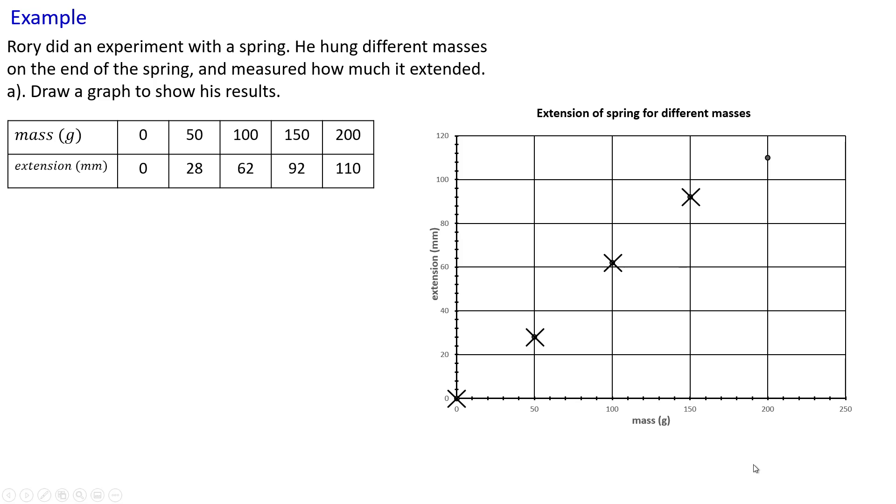150 and 92. And our final one is 200 to 110. Okay. Now they're not quite in a straight line, but they're nearly in a straight line. So what we can do is we can put a line through them. We call this a line of best fit.